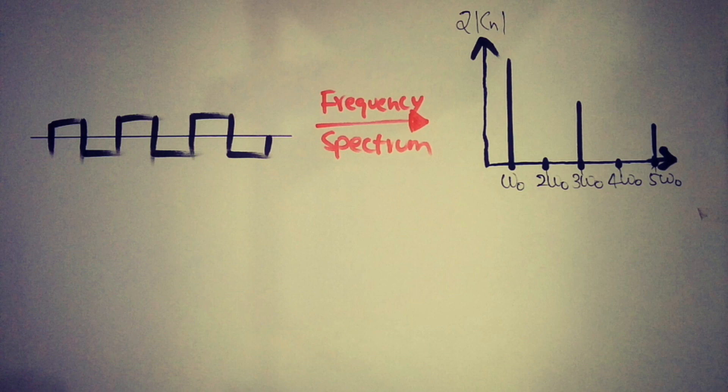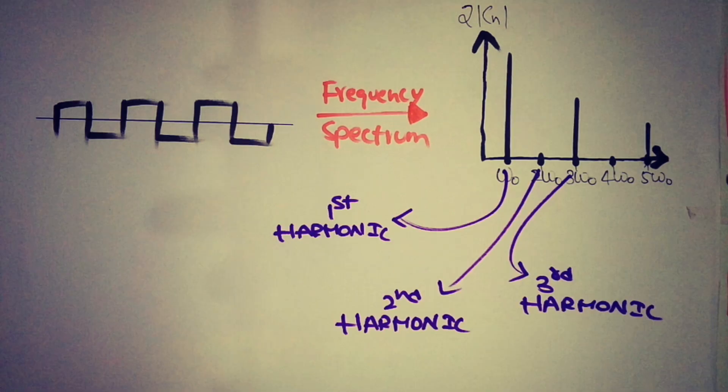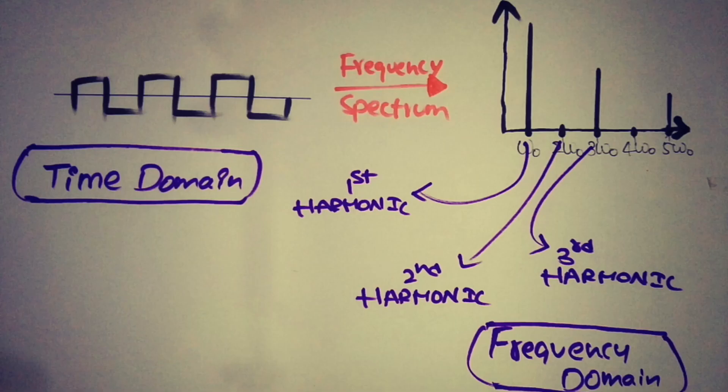In time domain, the square wave has a frequency of omega 0. When we go to the frequency spectrum, it is described with different harmonic frequencies. So by applying Fourier series, we plot the frequency spectrum of the signal where it is expressed in terms of harmonic frequency. Here we are transforming a time domain signal to frequency domain using Fourier series.